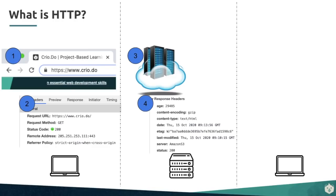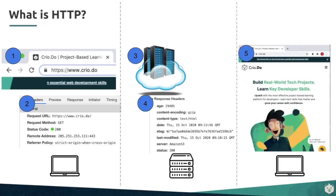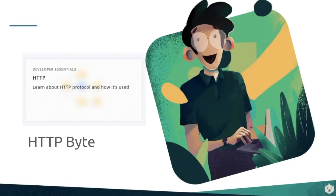The server responds back with an HTML file. You can see that the content type returned is text/HTML. It also gives more information about the server itself — in this case, the response is coming back from an Amazon S3 server, and the status code is 200. Once your client, the laptop, receives this HTTP response, it renders it beautifully in your browser. This is the whole journey of the HTTP protocol, from your laptop to the server and back.